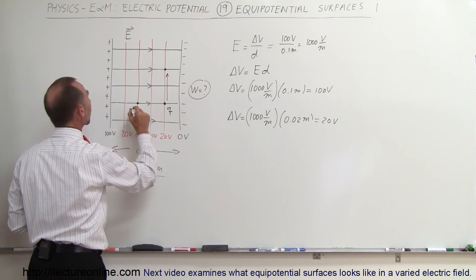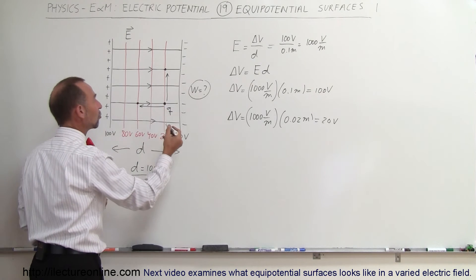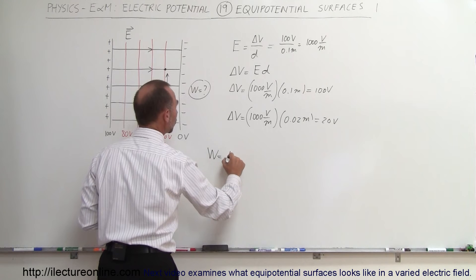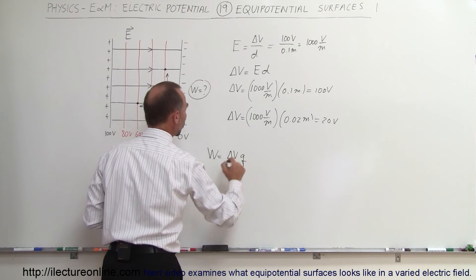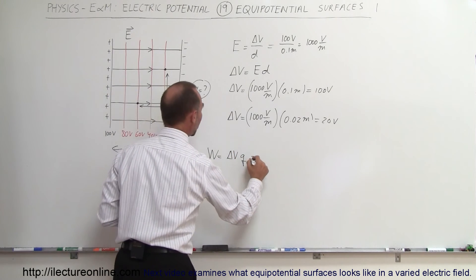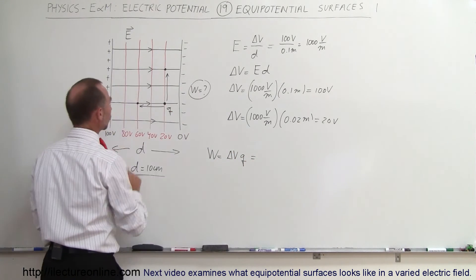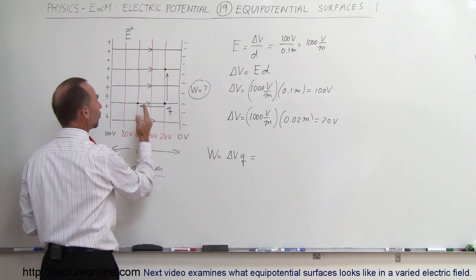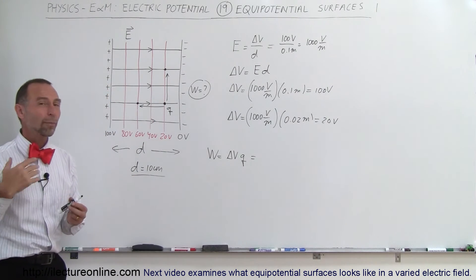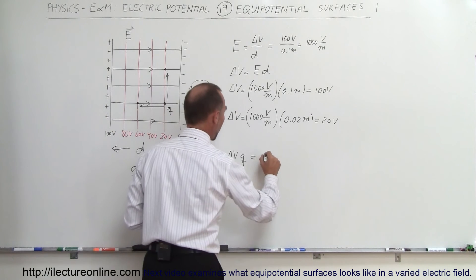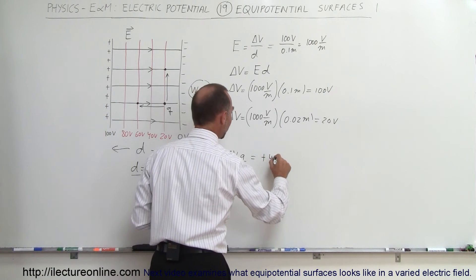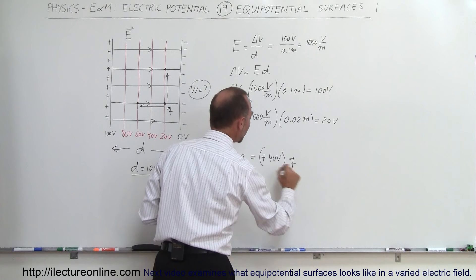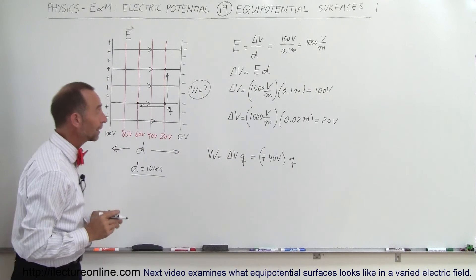But if you move it from there to there — crossing surfaces — work is required because the potential does change. The work in this case would be equal to the change in potential times the charge. What is the change in potential? It went from 20 volts to 60 volts, so the change was a positive 40 volts — that's positive 40 volts times the charge, and that would be the amount of work required.